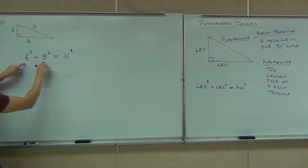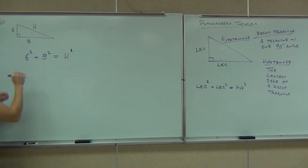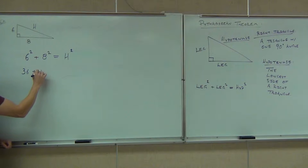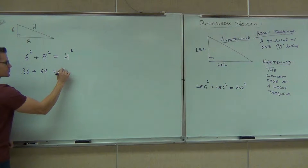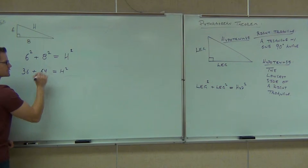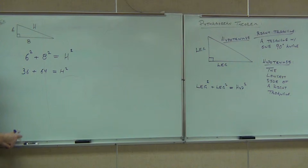Can you do these numbers? 6 squared is 36. Plus 8 squared is 64. Equals H squared. We're working it down now — it's an equation. Can you combine like terms? Yes.